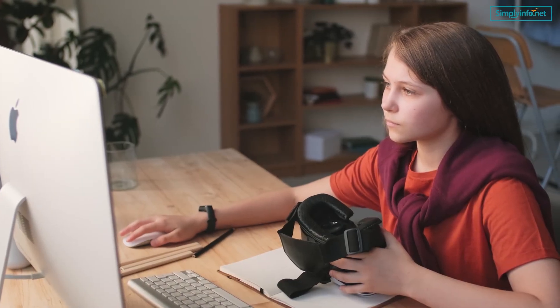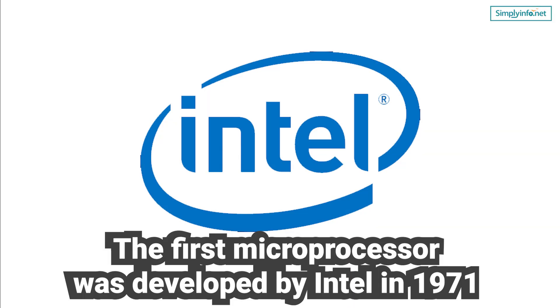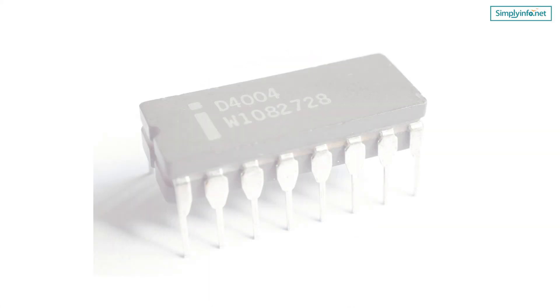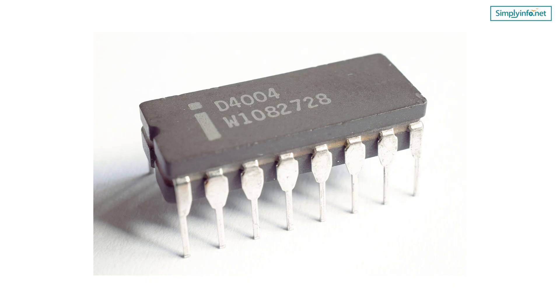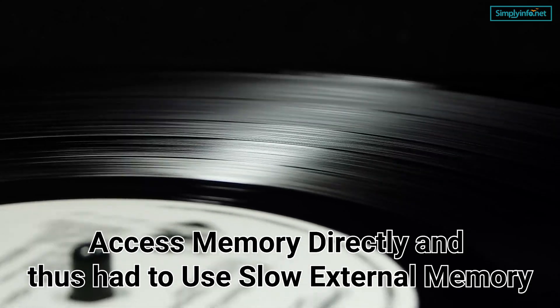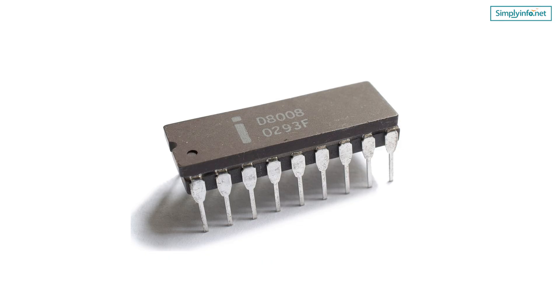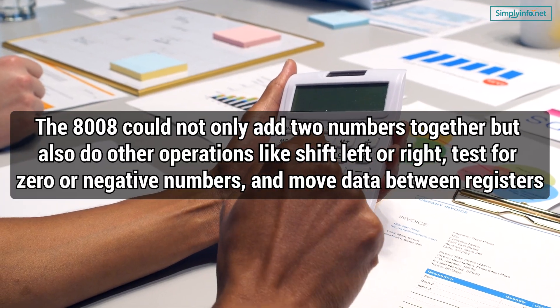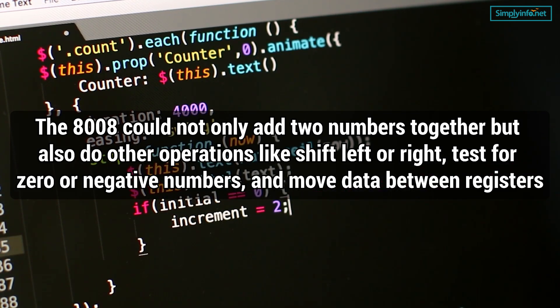The history of microprocessors starts in the early 1970s, when Intel co-founder Gordon Moore predicted that the number of transistors on a chip would double every year. The first microprocessor was developed by Intel in 1971 and was called the 4004. It had 2300 transistors and could perform 6000 instructions per second. The 4004 was not successful because it lacked instructions to access memory directly and had to use slow external memory. In 1973, a new design emerged as the 8008 with more than 8000 transistors. The 8008 could not only add two numbers together but also perform operations like shift left or right, test for zero or negative numbers, and move data between registers.